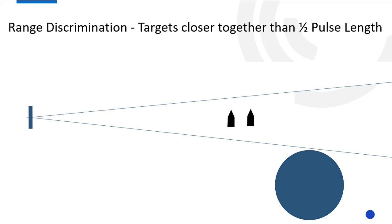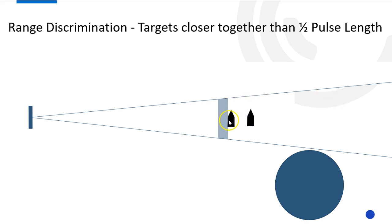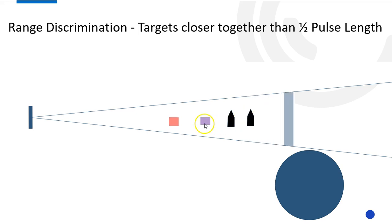So what can we do to discriminate between these two vessels? If we shorten the pulse length, everything is the same as before except the pulse is shorter. The leading edge hits the first target and generates a short echo, but the trailing edge passes quickly and stops the echo. Then the leading edge hits the second target and generates another echo. There is now a gap between them, and we see two different targets. So shorter pulse length improves range discrimination. To summarize: range discrimination, bearing discrimination, X band versus S band on attenuation, and short pulse versus long pulse on attenuation.